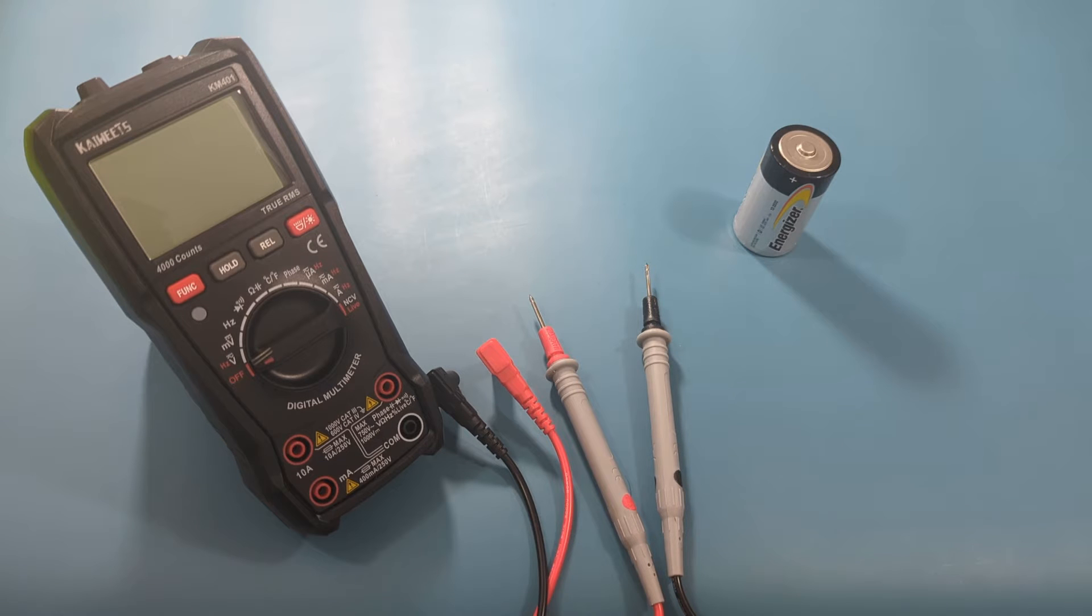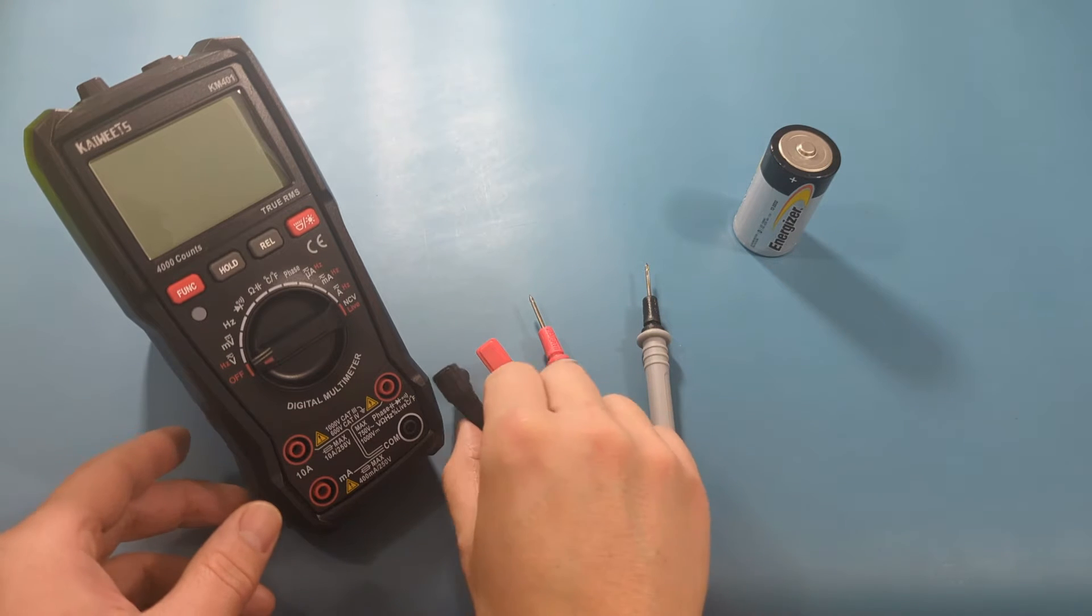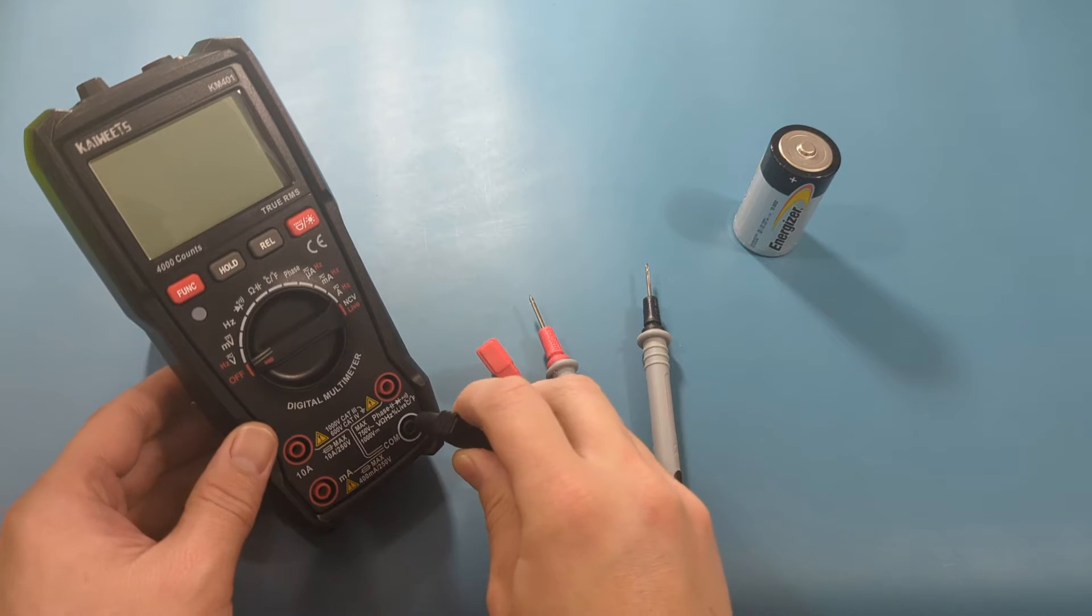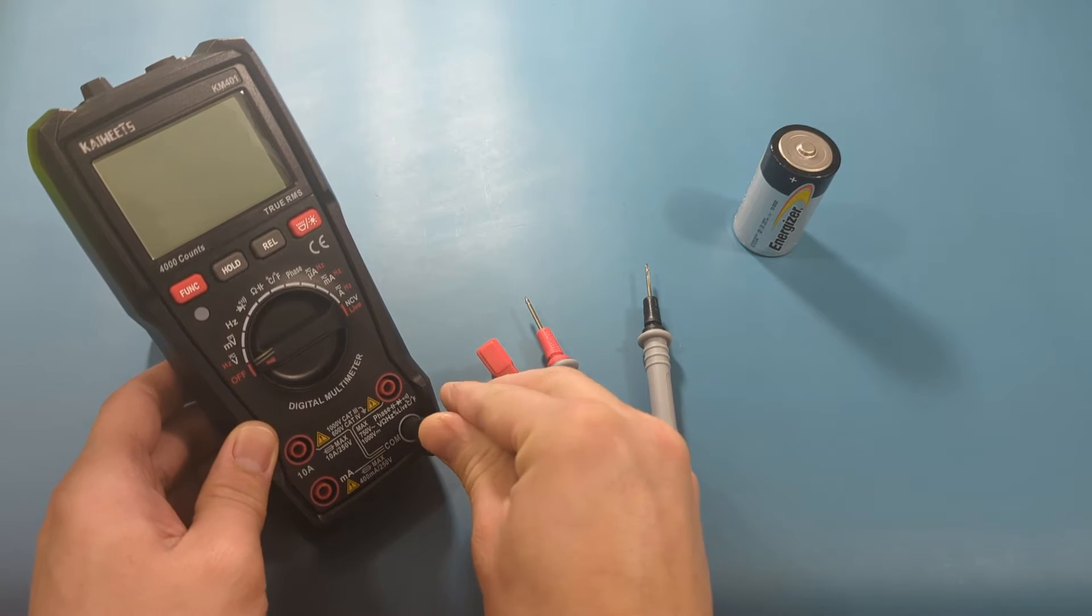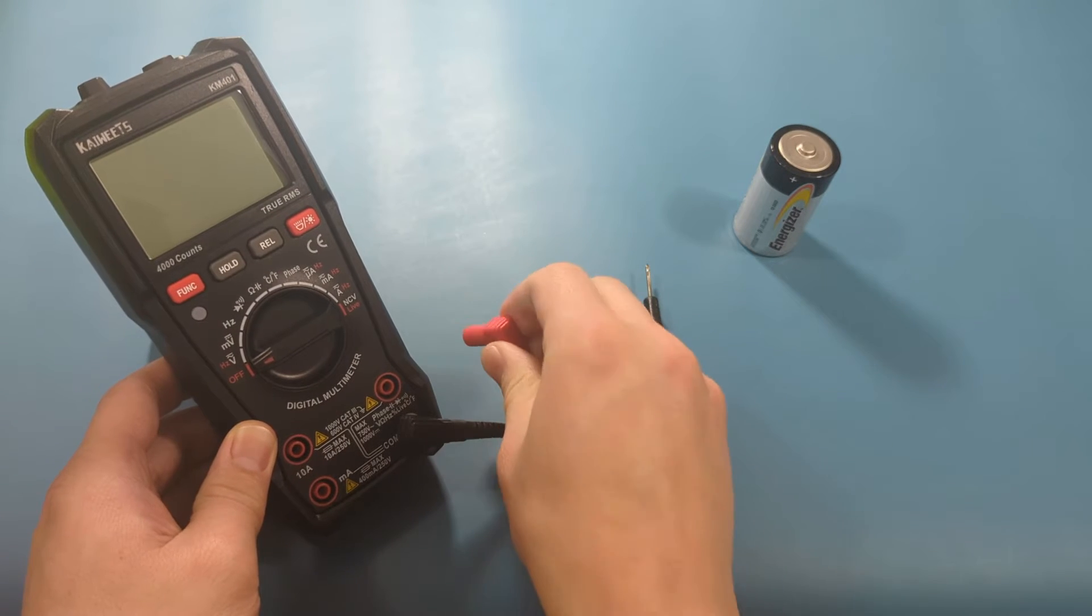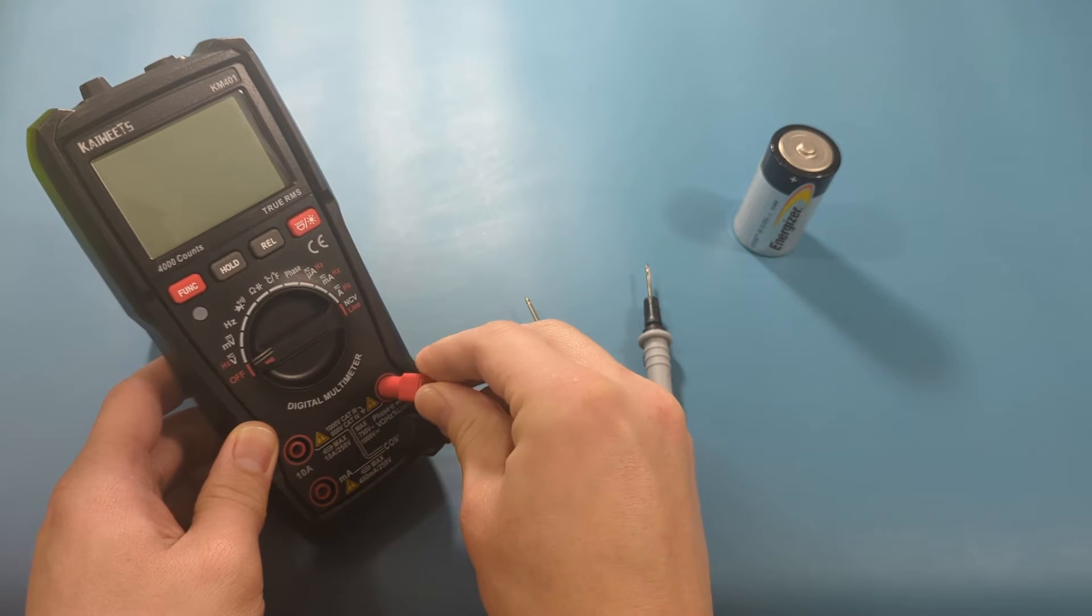On the multimeter, the red probe is the positive terminal, and the black probe is the negative terminal. Connect the black probe to the COM port. Connect the red probe to the voltage and ohm port.